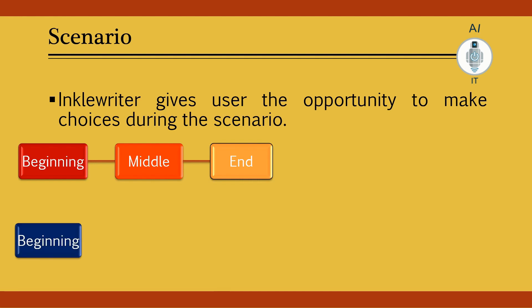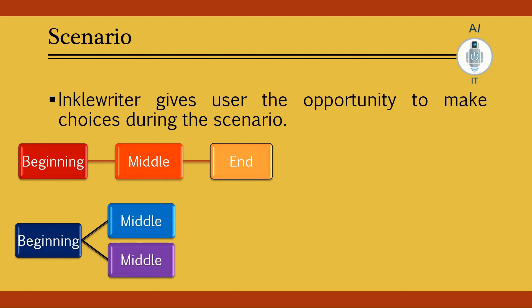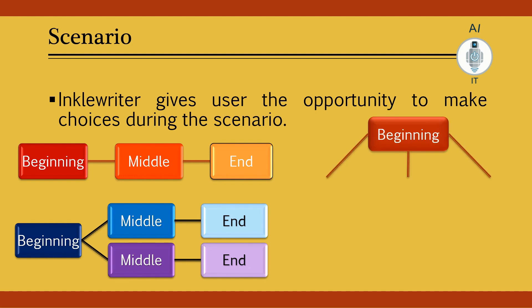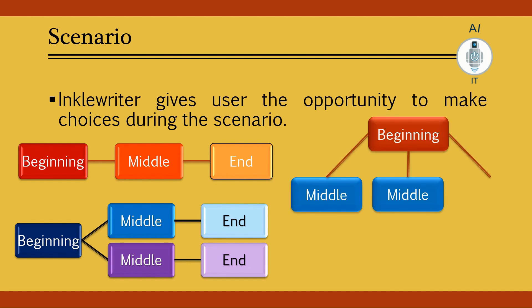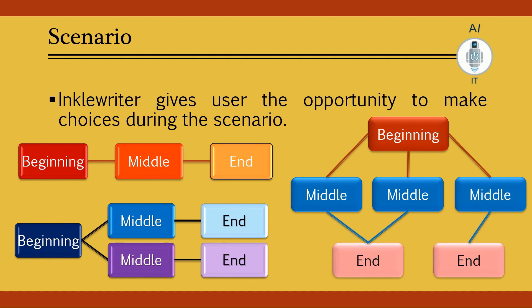Some formats start with a beginning and offer two options in the middle which lead to a different ending, or there is a complex scenario where there are multiple middle stories leading to different endings. Remember to create a navigation map on paper first so that it becomes easy to outline the story and use the correct choices of branching.